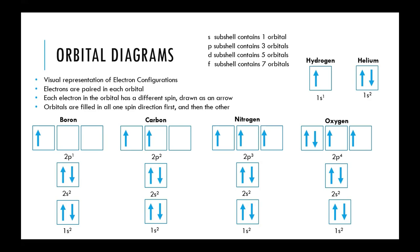The next quantum number is the subshell — S, P, D, and F — which can contain 2, 6, 10, or 14 total electrons respectively. Within those subshells there are also the orbitals. Depending on how large the subshell is, it can contain more orbitals, but each one can only hold two electrons.